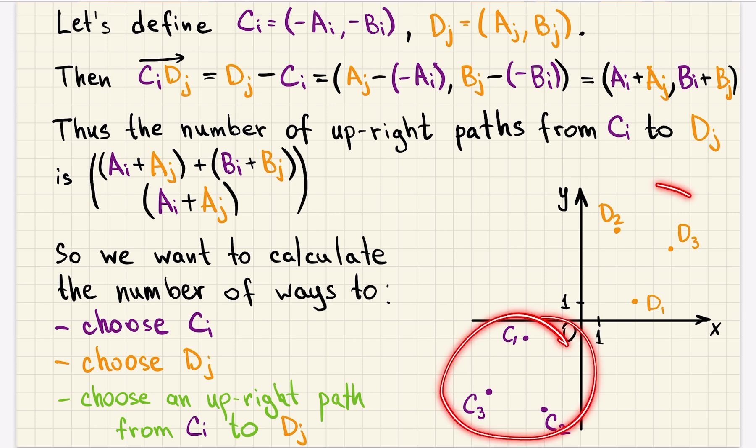This is a point c_i, this is a point d_j. Then if we look at point c_i and point d_j, the vector between them has coordinates (a_i + a_j) and (b_i + b_j). That was why we defined the points like that. So if we look at the grid where these points are the corners of the rectangular grid, this binomial coefficient will be the number of upright paths from one corner to the other, so from c_i to d_j.